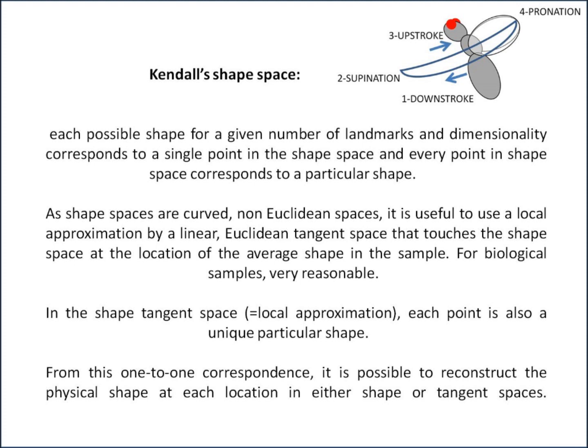As these shape spaces are curved, non-Euclidean spaces, it's actually useful to have a local approximation by having a linear Euclidean tangent space that touches the shape space at the location of the average shape in the sample, which corresponds to the consensus configuration. For biological samples this is quite a reasonable assumption and there's not too much distortion.